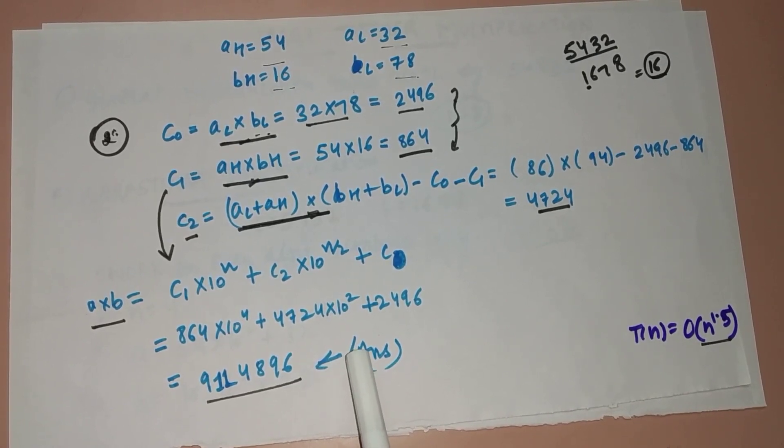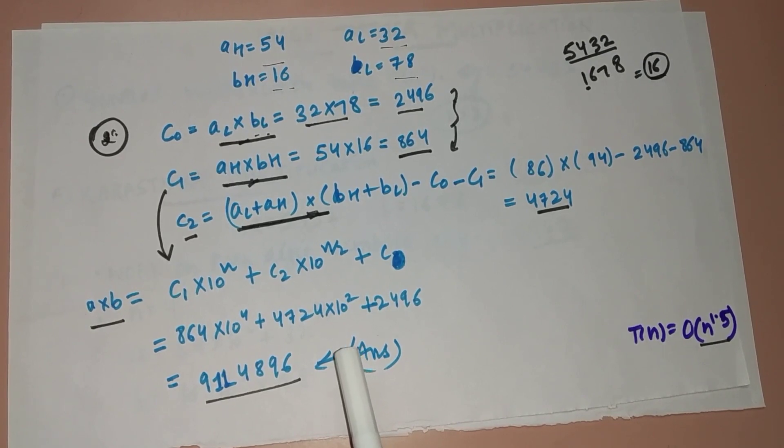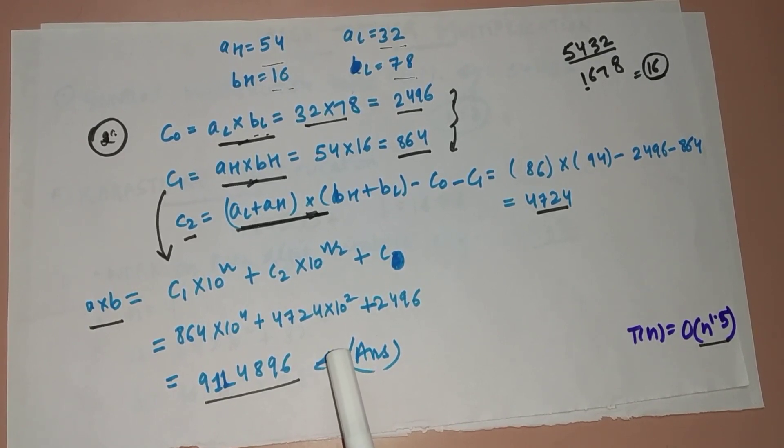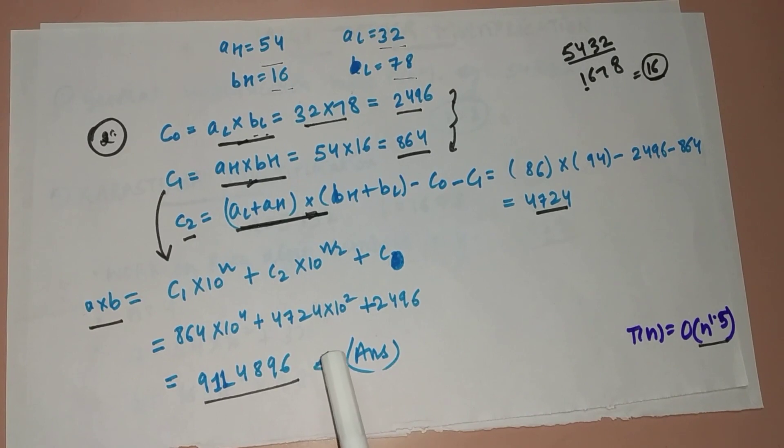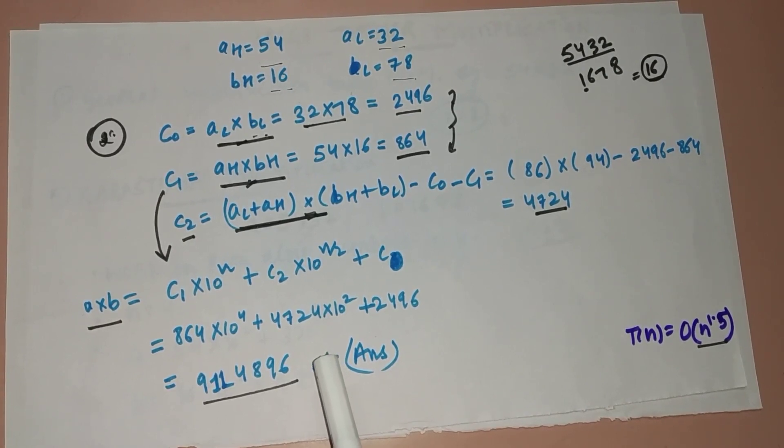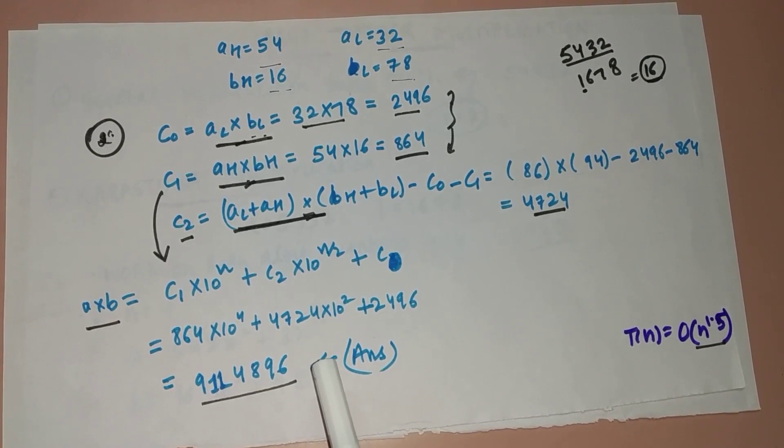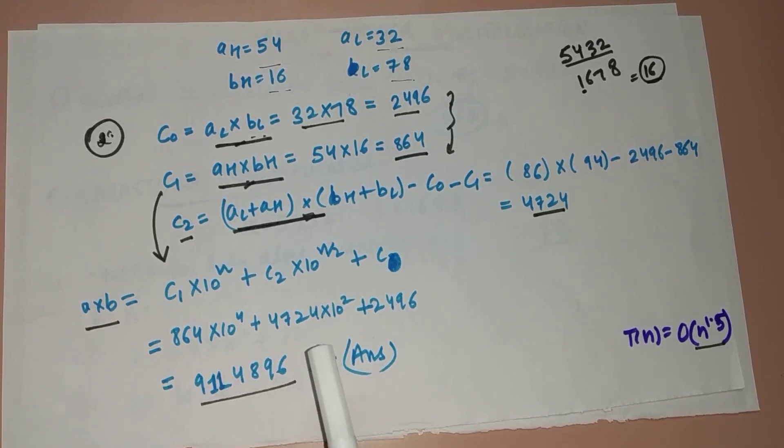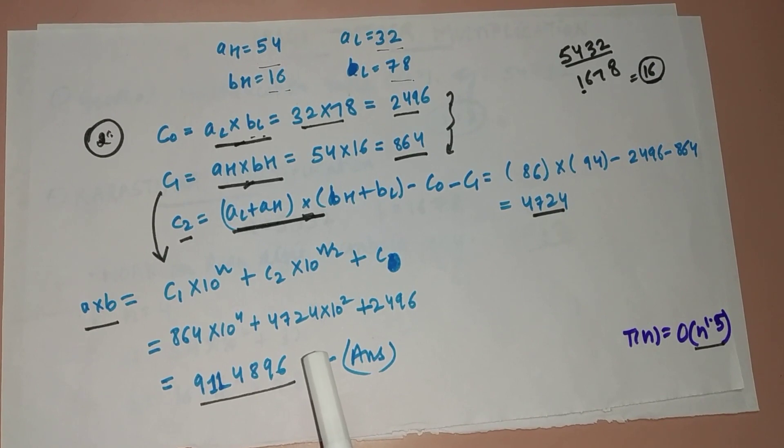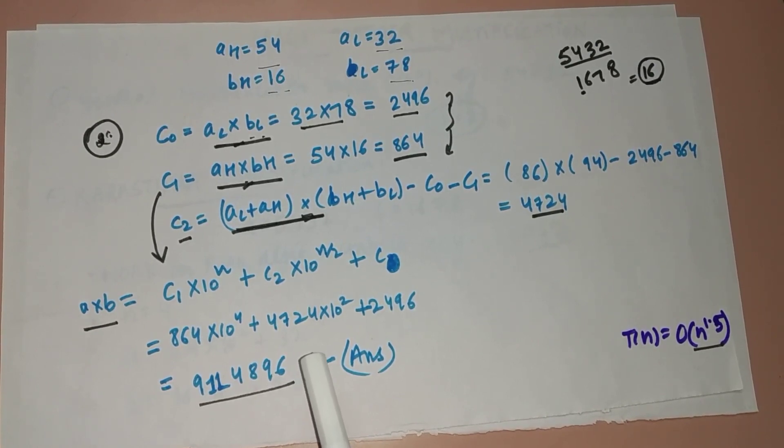It may seem very normal in the case of smaller numbers that the difference between n² and n^1.5 is not that big, but in the case of larger numbers, very large numbers, this difference really matters a lot and basically makes the computation very easy. That's why we use Karatsuba. Thank you guys.